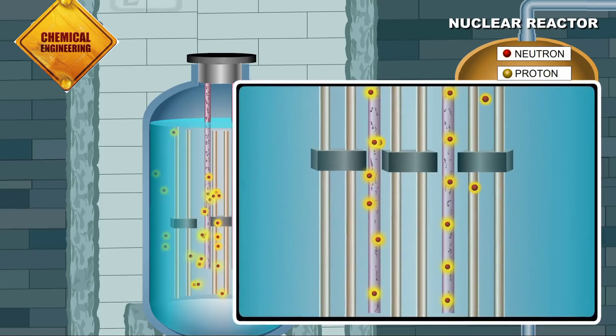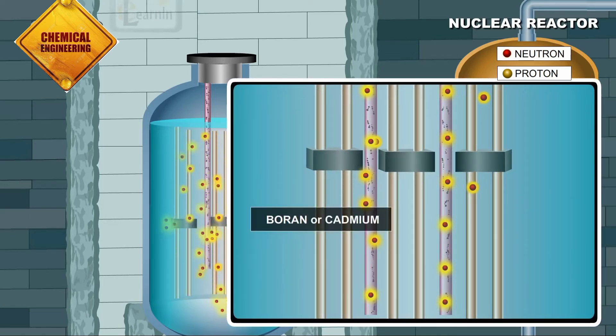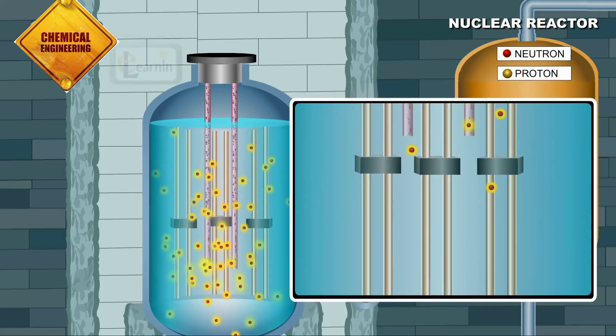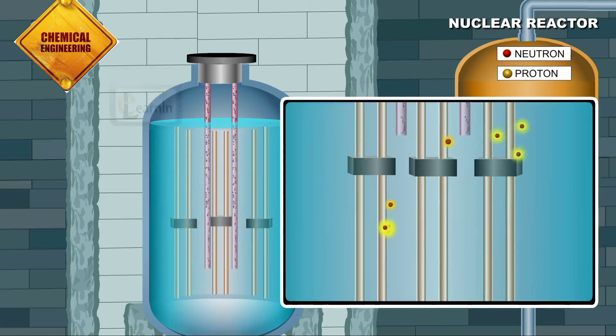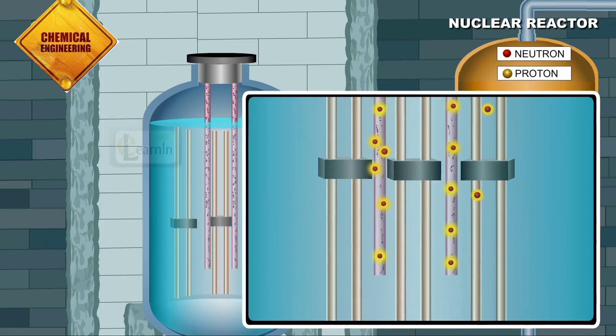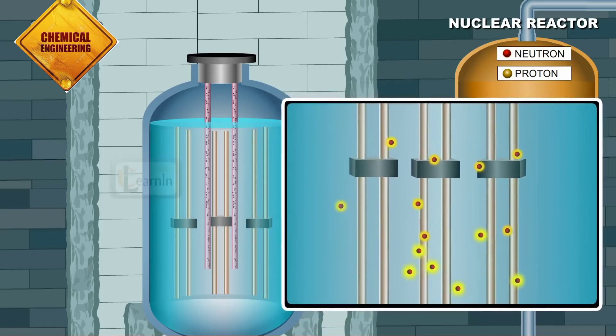Usually such control rods are made of boron or cadmium. To increase the rate of fission reactions, these rods can be removed from the moderator. A steady output of energy can be maintained by inserting or removing the control rods in the nuclear reactor.